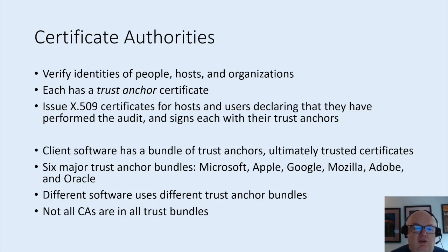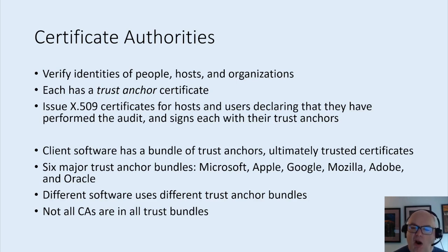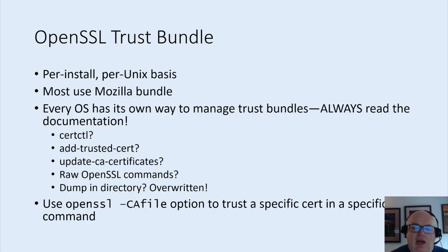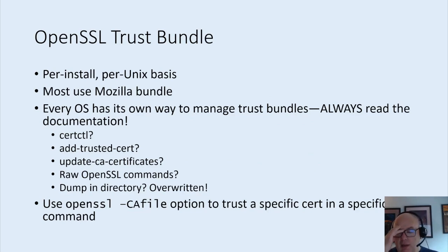Client software comes with trust anchors it trusts to sign other people's certificates. There are six major trust anchor bundles: Microsoft, Apple, Google, Mozilla, Adobe, and Oracle. Different software uses different trust anchor bundles and not all certificate authorities are in all trust bundles. The trust bundle is installed per platform and per Unix. If you are using FreeBSD versus CentOS, the trust bundle you get may be slightly different. Most Unixes use the Mozilla bundle.